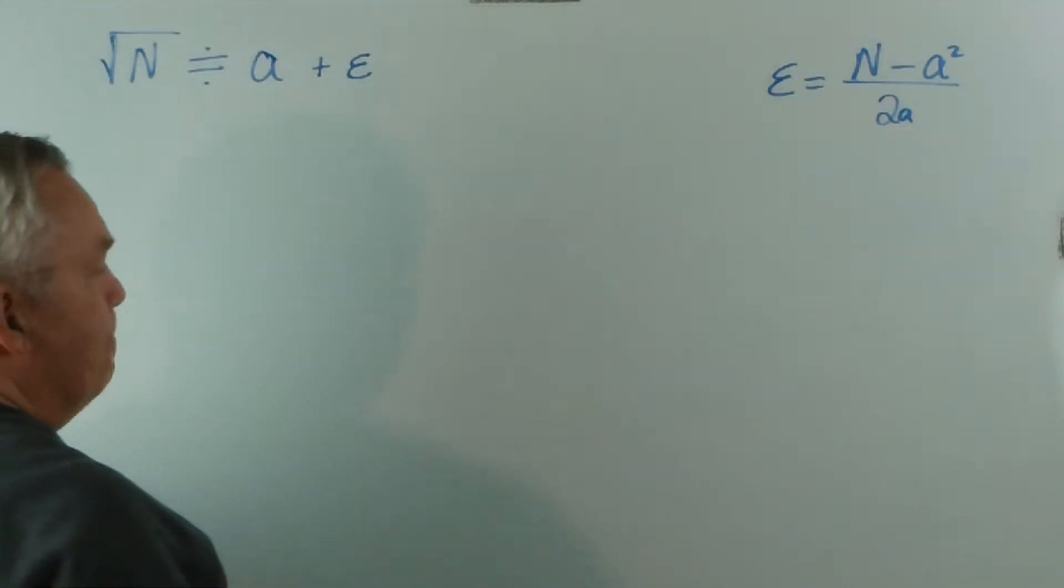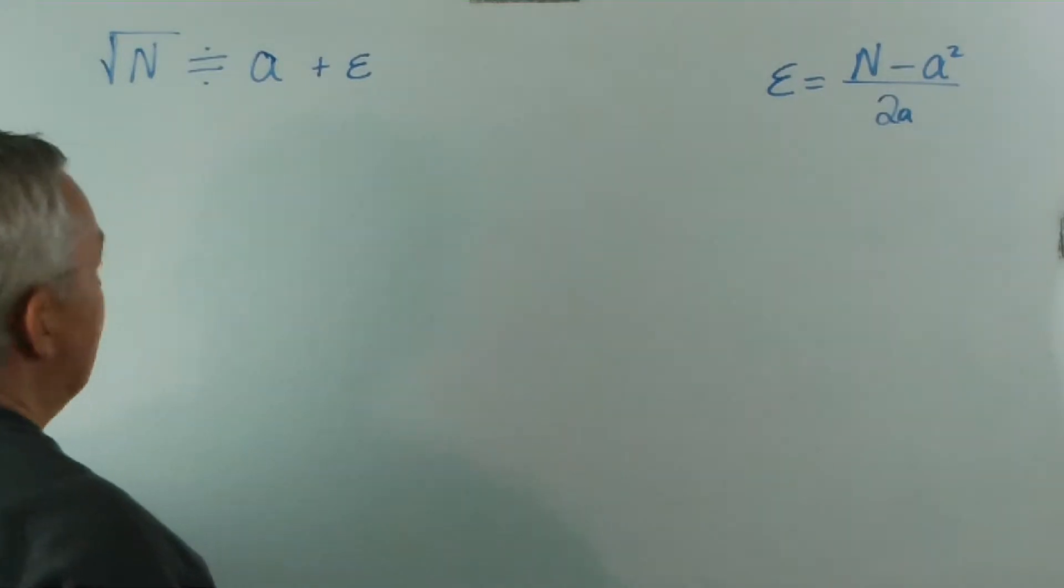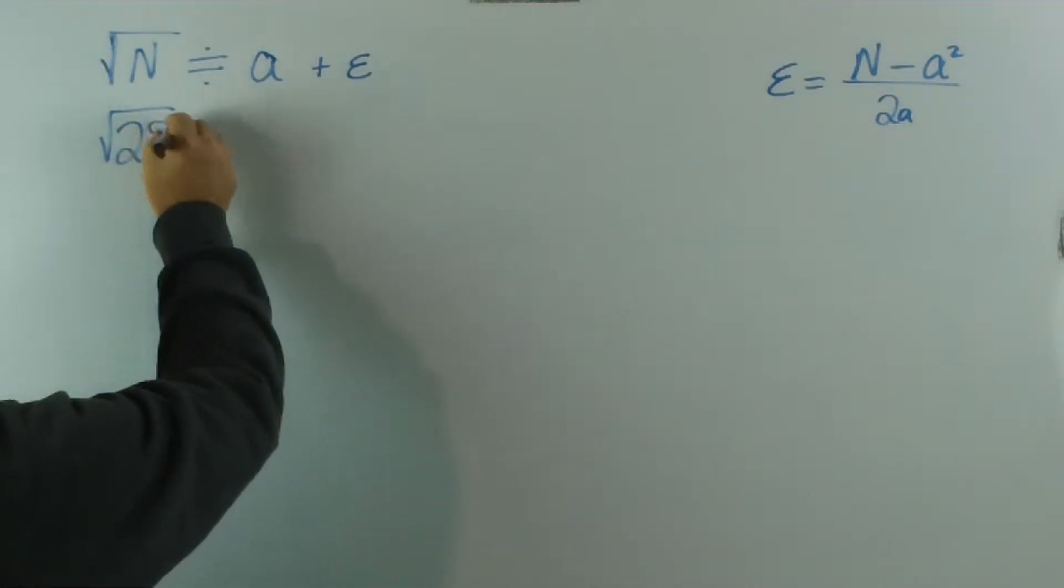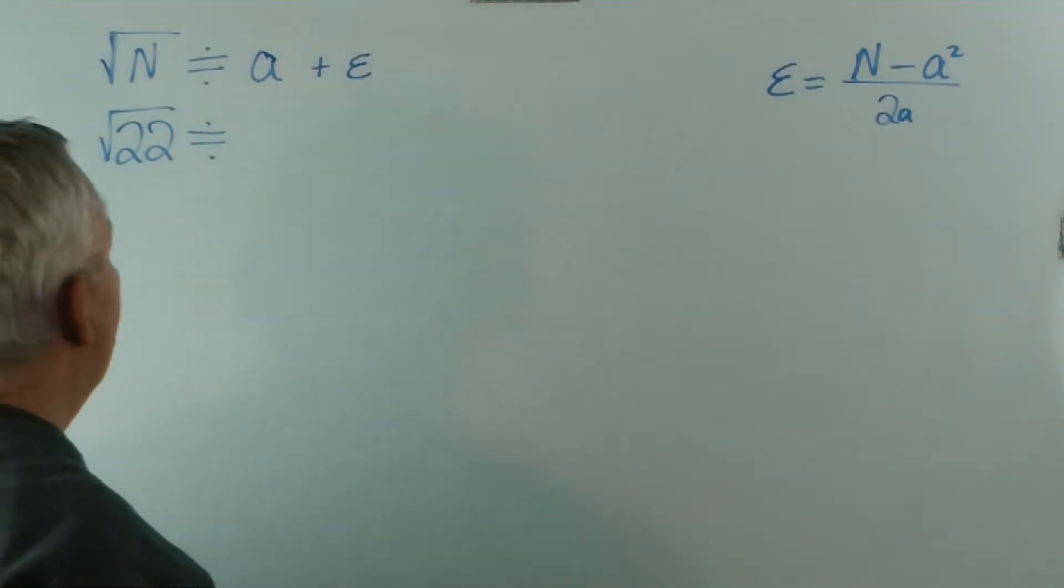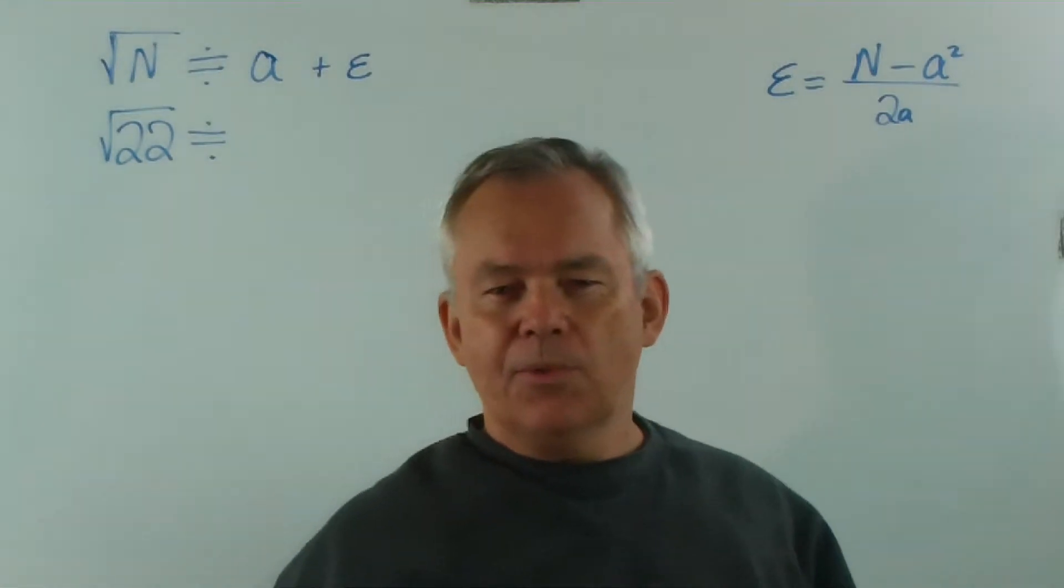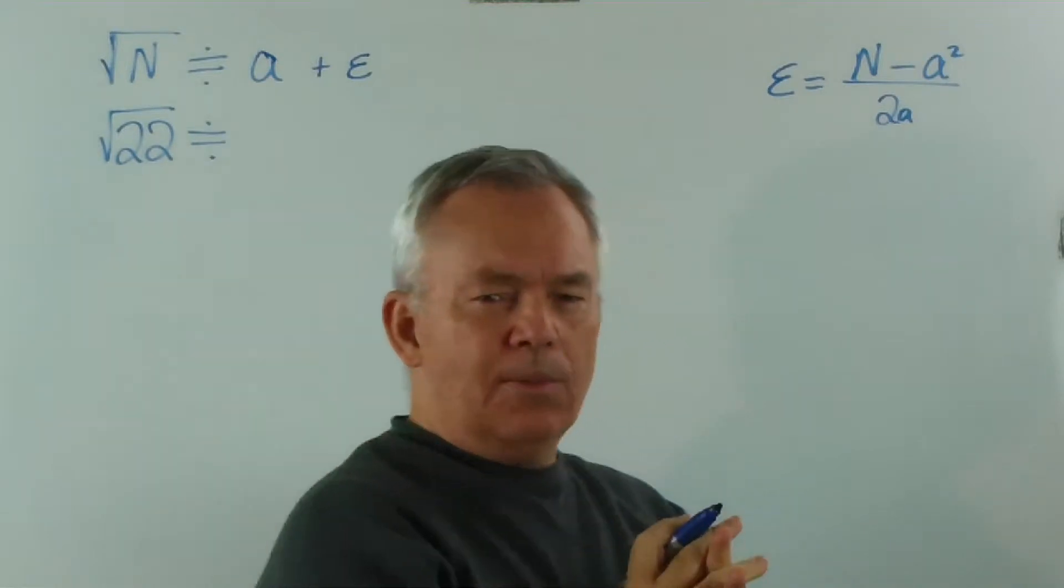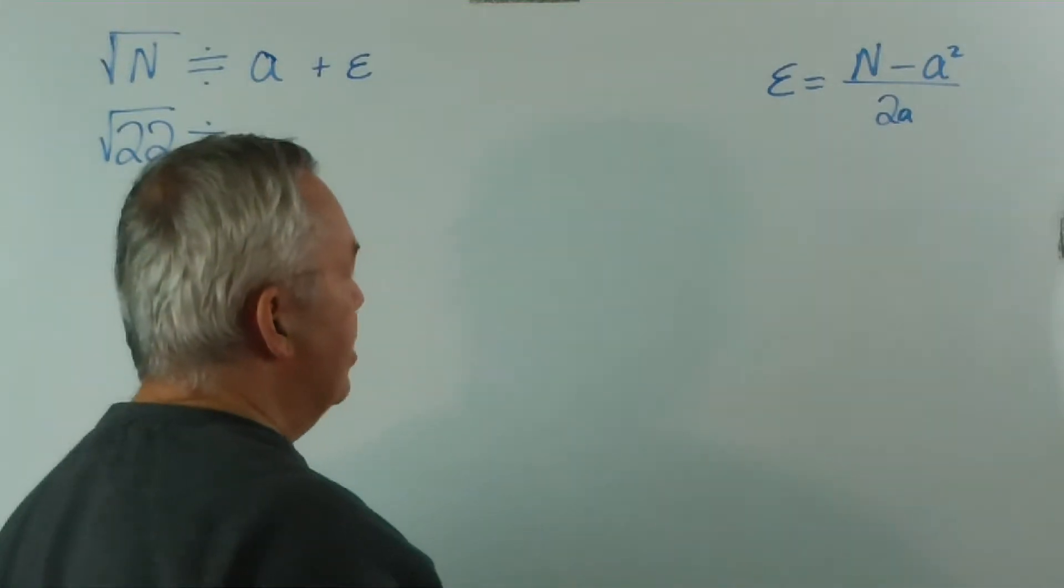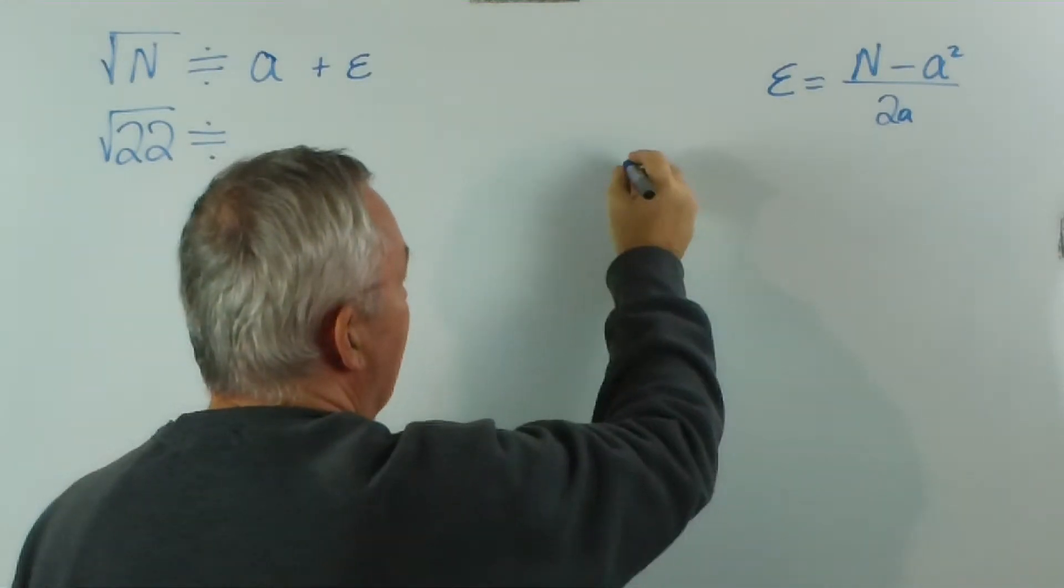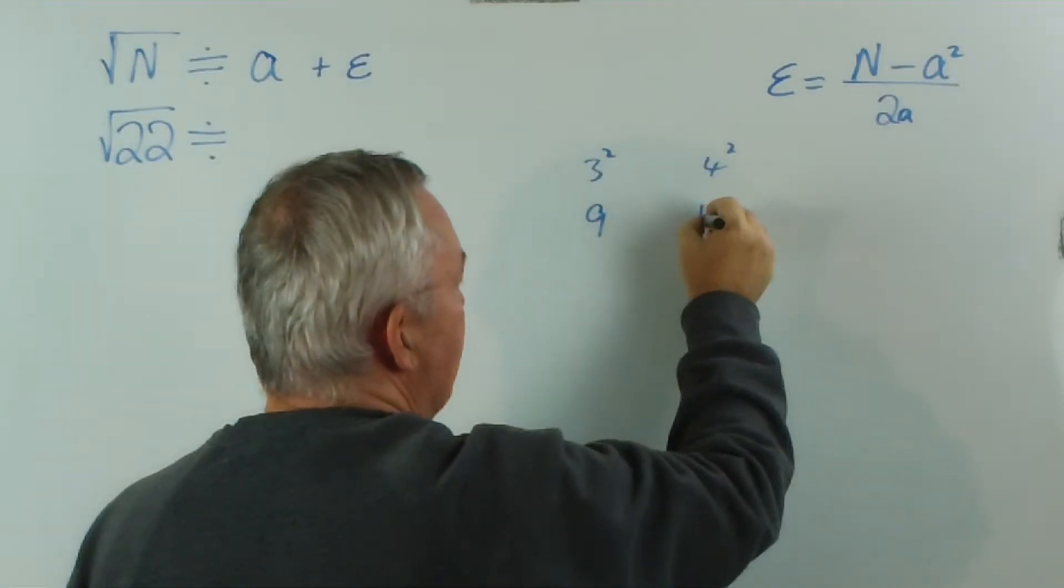So let's get started. We will find the square root of 22. Our first job is to find an estimate for the square root of 22. To do that, we need to know our squares well. You should know 1 squared, 2 squared, 3 squared and so on. 3 squared of course is 9, 4 squared is 16.